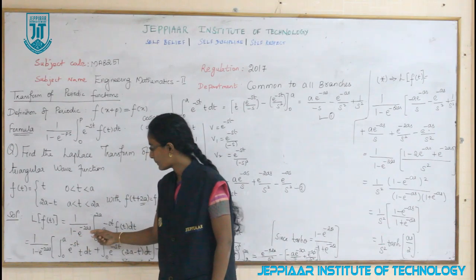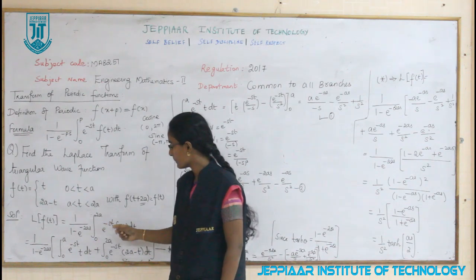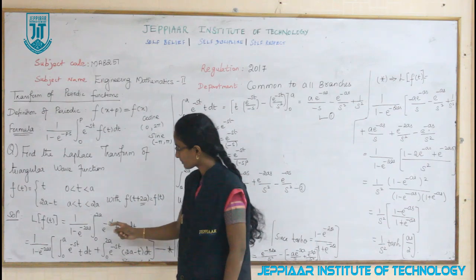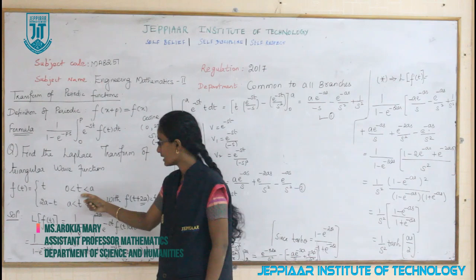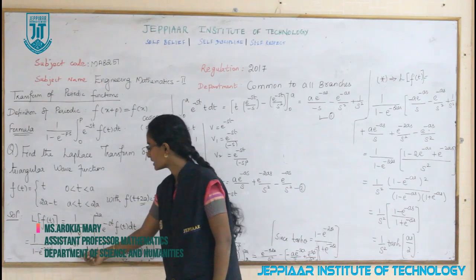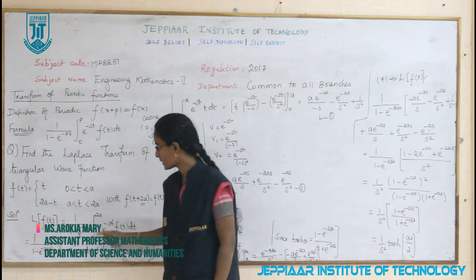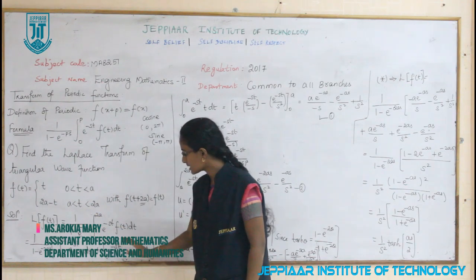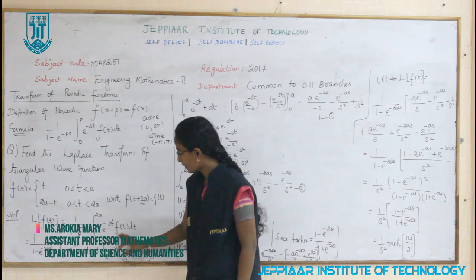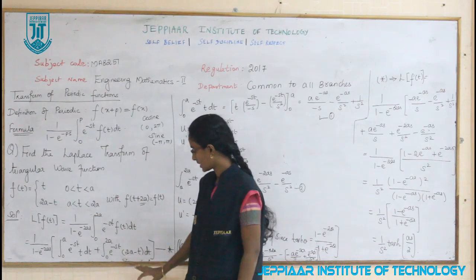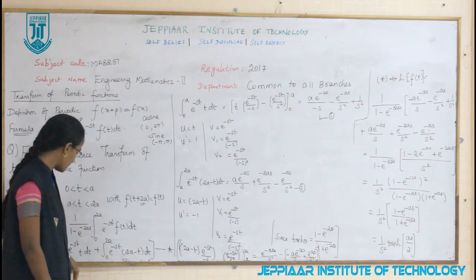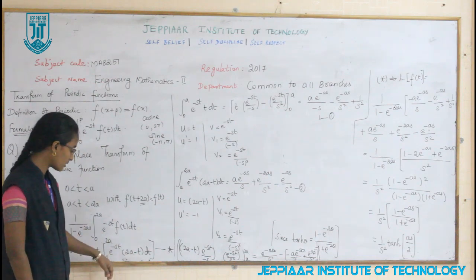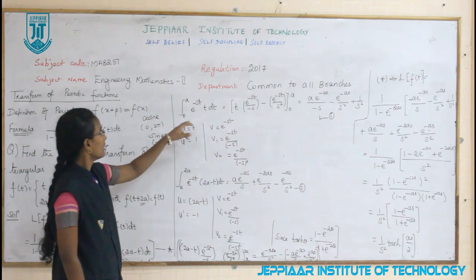We have 1 divided by (1 minus e^(−2as)) times the integral from 0 to 2a of e^(−st) f(t) dt. The interval is split into two parts: 0 to a and a to 2a. For 0 to a the function is t, and for a to 2a the function is 2a − t. So we substitute f(t) = t for the first integral from 0 to a, and f(t) = 2a − t for the second integral from a to 2a.